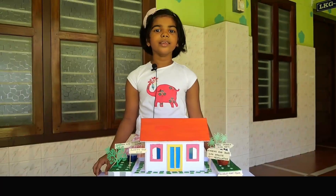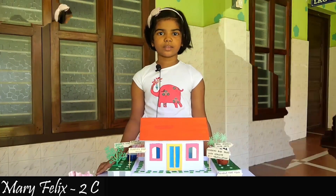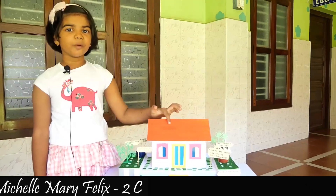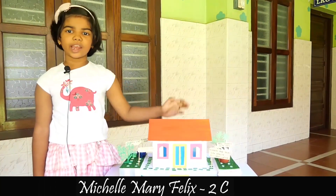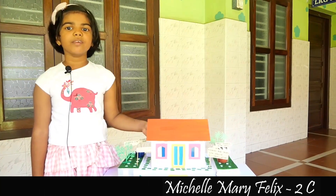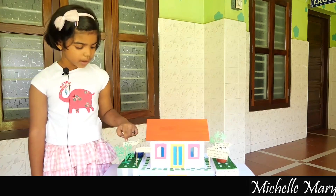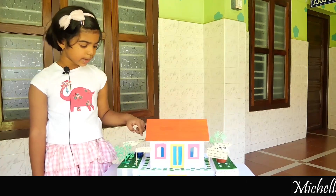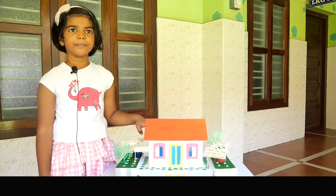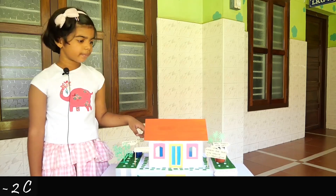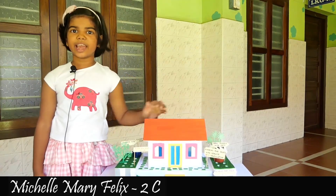This is a model of a complete house with a sloping roof, windows and doors with opposite ventilation, a dustbin with legs, a closed drainage system, and well covered with a net.